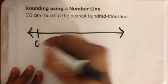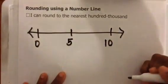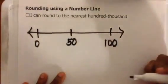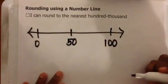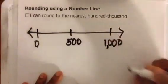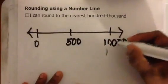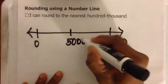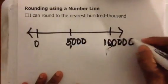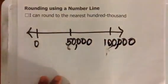You know that halfway between zero and ten is five. Halfway between zero and one hundred is fifty, because fifty plus fifty is one hundred. Halfway between zero and one thousand is five hundred. Halfway between zero and ten thousand is five thousand. And lastly, halfway between zero and one hundred thousand is fifty thousand.